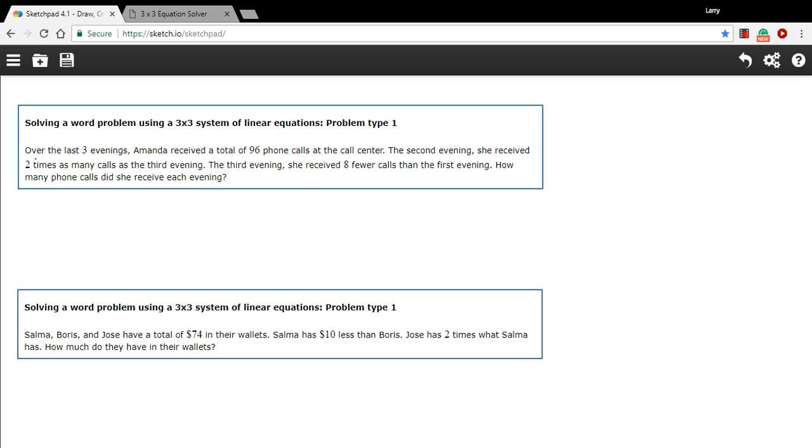On the first one, it says over the last three evenings, Amanda received a total of 96 phone calls at the call center. The second evening, she received two times as many calls as the third evening. And the third evening, she received eight fewer calls than the first evening. How many phone calls did she receive each evening? So we want the number of phone calls for evening one, evening two, evening three.